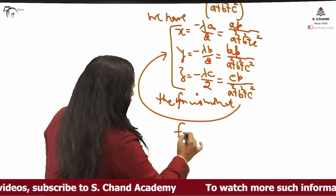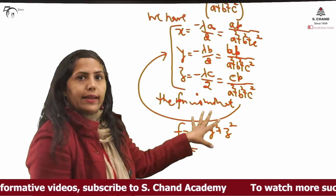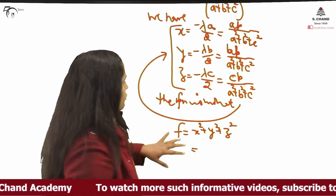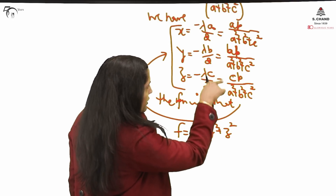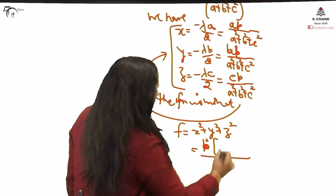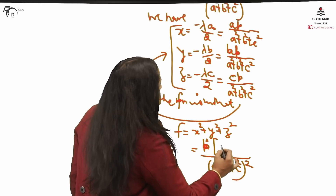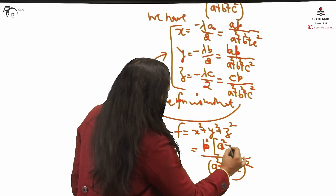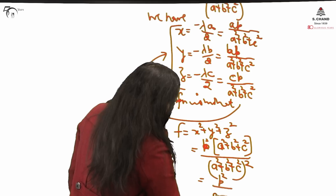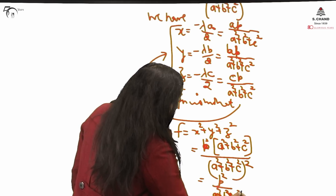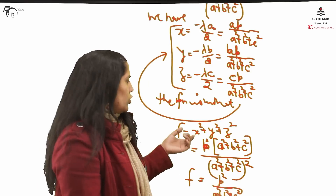Now I am calculating the minimum value. My f was x² + y² + z². Substitute the values: P² is common when you square them, and the LCM is also common. Finally, a² + b² + c² — one term gets cancelled. The final minimum value is P² / (A² + B² + C²). This is the final value for which the function is minimum based on the condition Ax + By + Cz = P.